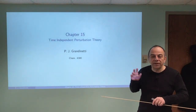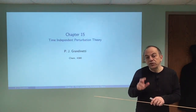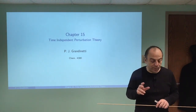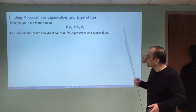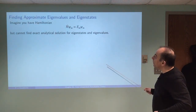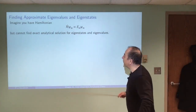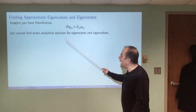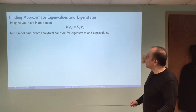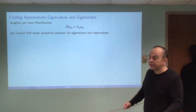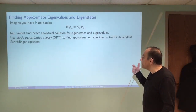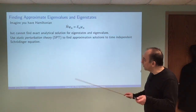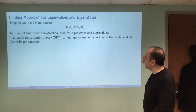In this chapter we're going to focus on one particularly useful approach called time-independent perturbation theory, also known as static perturbation theory. Imagine you have some Hamiltonian where H psi equals E psi, but you don't have a way to find exact analytical solutions for the eigenvalues and eigenstates. We can use static perturbation theory to find solutions, provided we meet a few conditions.